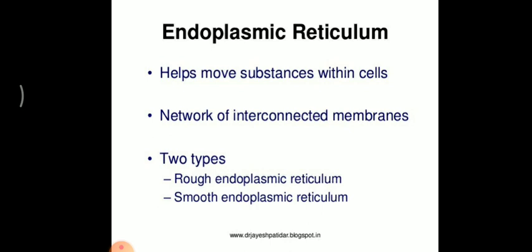The endoplasmic reticulum is of two types: smooth endoplasmic reticulum and rough endoplasmic reticulum. The rough endoplasmic reticulum has ribosomes attached to its surface, which are responsible for protein synthesis. The smooth endoplasmic reticulum has no ribosomes and is not involved in protein synthesis.